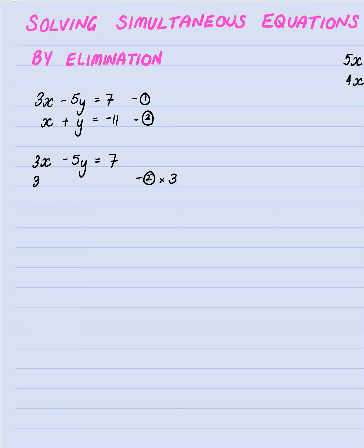So it's going to be three times x plus three times y equals three times minus 11 which is minus 33. Now to eliminate the x's I'm going to subtract one equation from the other. Three x take three x is no x so they've been eliminated. They're out of here, gone.